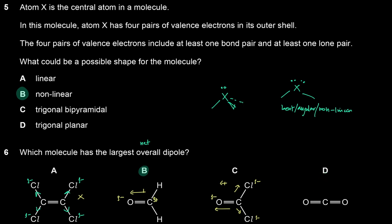Molecule D — carbon dioxide — has dipoles that cancel each other out, so there's no net dipole there either. The answer is B.